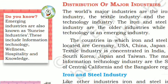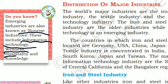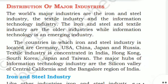Emerging industries are also known as sunrise industries. These include information technology, wellness, hospitality, and knowledge. The worst major industries are the iron and steel industry, the textile industry, and the information technology industry. The iron and steel and textile industries are older industries, while information technology is an emerging industry.